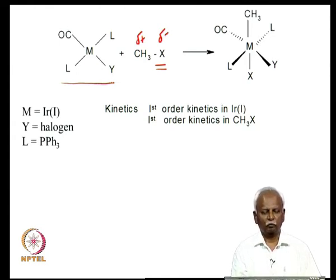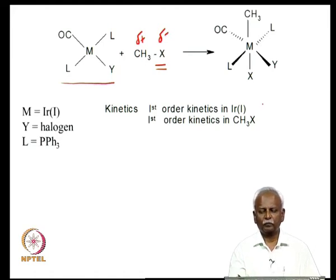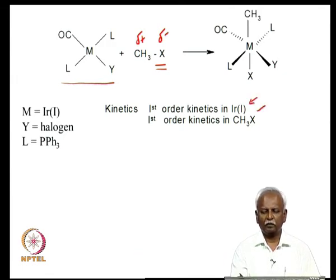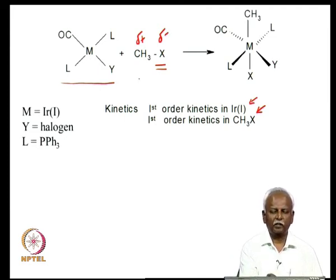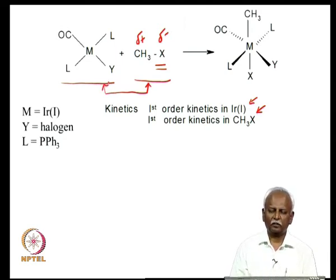A kinetic study of the reaction of methyl halide with Vaska's complex shows that it is first order in iridium and first order in methyl halide. This implies that the rate-determining step involves a bimolecular collision between these two molecules — the concentration of both iridium(I) and methyl halide significantly affects the rate of the reaction.